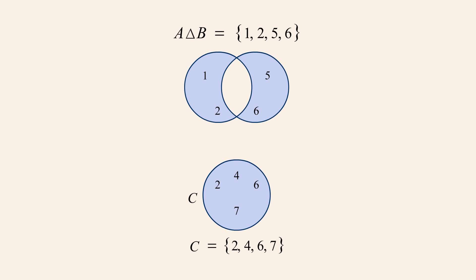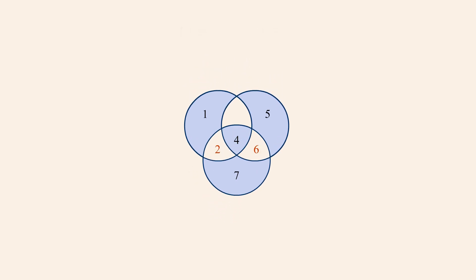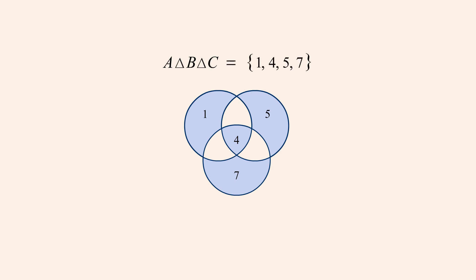We now form the symmetric difference of this set with set C. These two sets have the numbers 2 and 6 in common, so their intersection is 2 and 6. The symmetric difference will therefore contain everything except 2 and 6. So the symmetric difference of sets A, B, and C consists of 1, 4, 5, and 7.